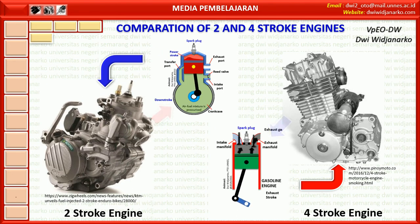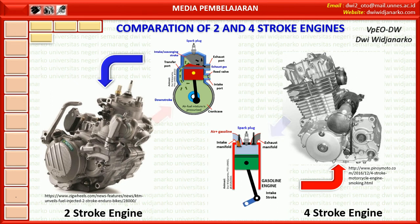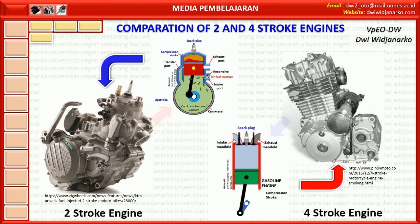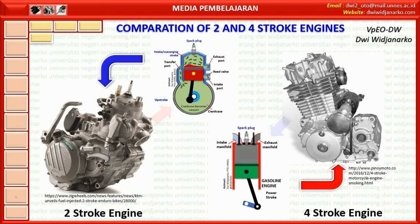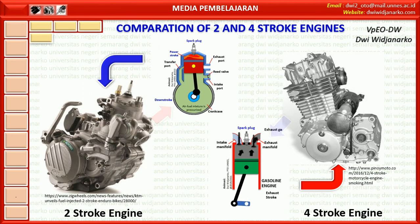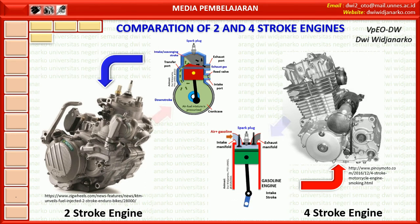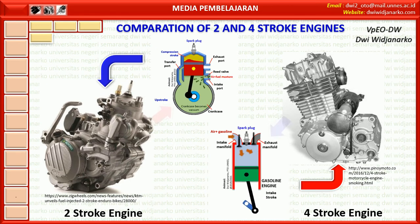The 2 stroke engine consists of 2 ports: inlet and outlet ports. The 4 stroke has inlet and exhaust valves. In a 2 stroke engine, there is higher torque generated than in a 4 stroke engine. The 2 stroke produces more smoke than the 4 stroke engine because some oil burns with the fuel. In terms of power to weight ratio, the 2 stroke engine has a higher ratio than a 4 stroke engine.